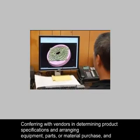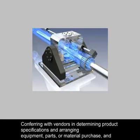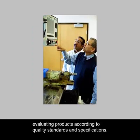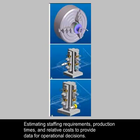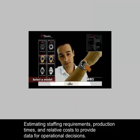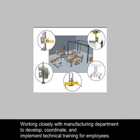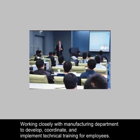Collaborating with Configuration Control and Design Engineering regarding Product Tooling and Design to Ensure Effectual Production Methods. Conferring with Vendors in Determining Product Specifications and Arranging Equipment, Parts or Material Purchase and Evaluating Products According to Quality Standards. Estimating Staffing Requirements, Production Times and Relative Costs to Provide Data for Operational Decisions. Working closely with the Manufacturing Department to Develop, Coordinate and Implement Technical Training for Employees.